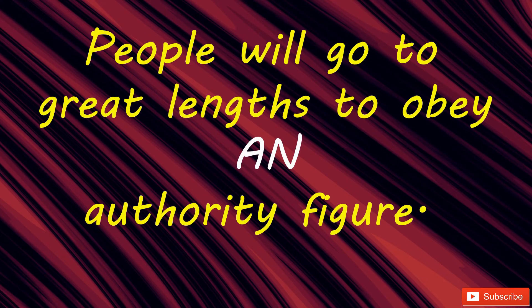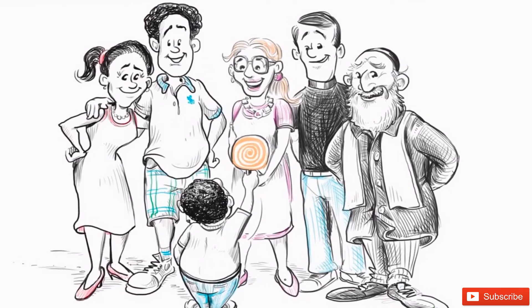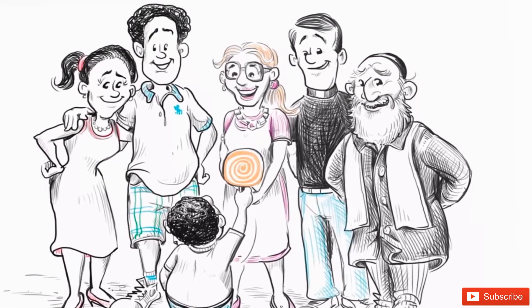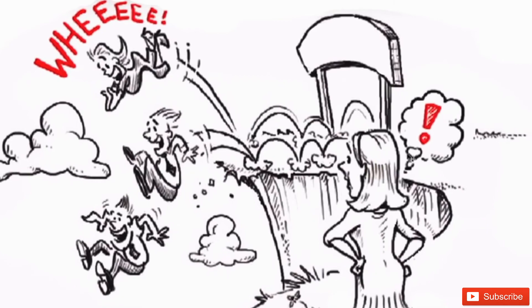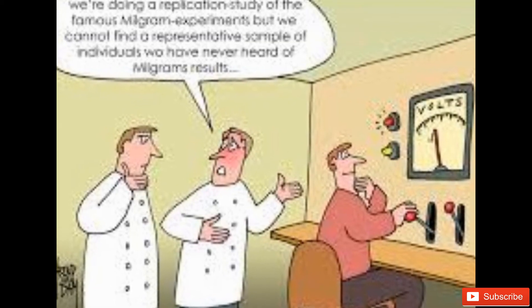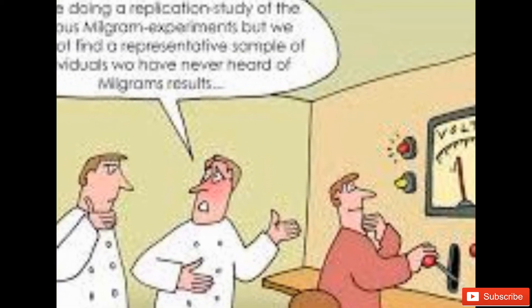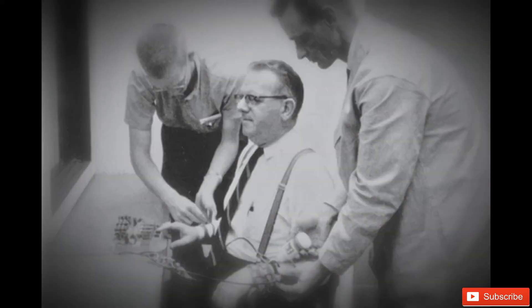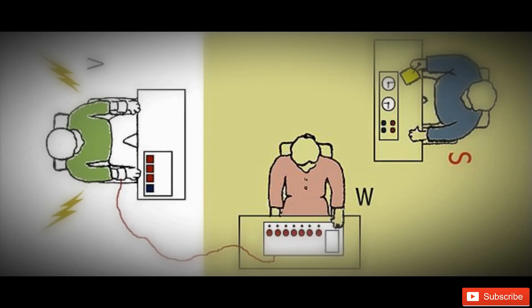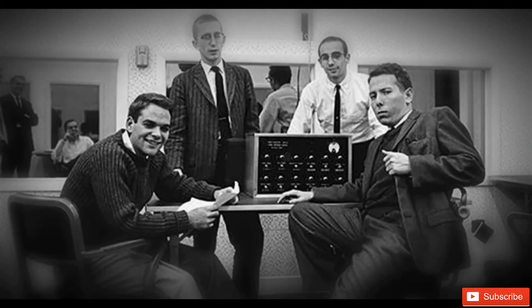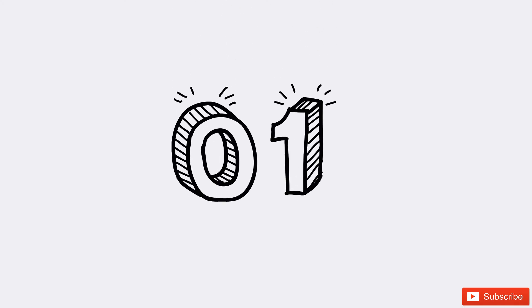Number 2: People will go to great lengths to obey an authority figure — sometimes even dangerous lengths. In his famous obedience experiments, psychologist Stanley Milgram found that people would be willing to deliver a potentially fatal electric shock to another person in order to obey the experimenter.